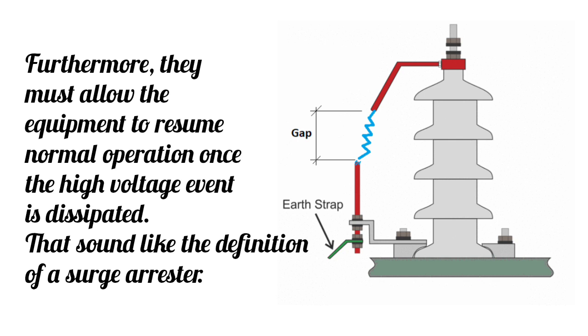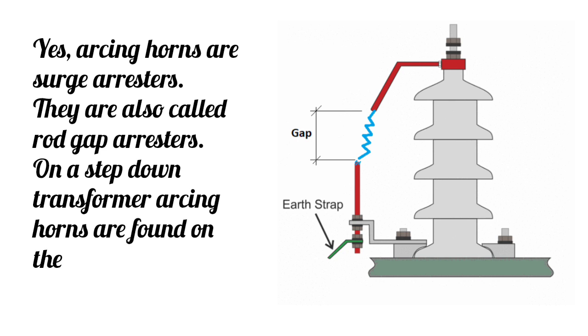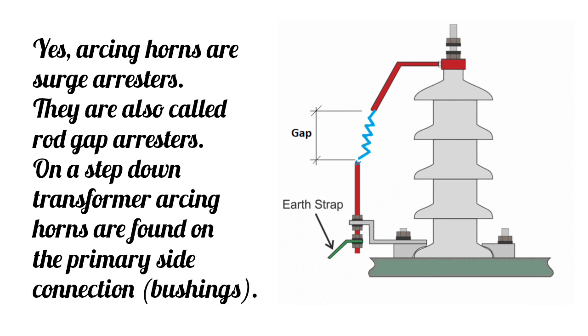That sounds like the definition of a surge arrestor. Yes, Arcing Horns are surge arrestors. They are also called rod gap arrestors. On a step-down transformer, Arcing Horns are found on the primary side connection bushings.